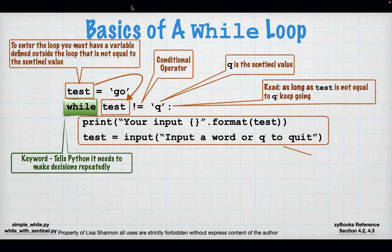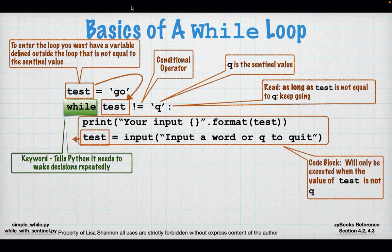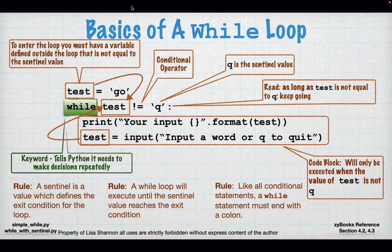Inside the local scope there are just a couple of lines: I'm going to print what somebody input, and then ask them to change the value of test by saying 'input a word or Q to quit'. The value of test is what changes. When we go back to the top of the while loop and test against Q, if they're the same, nothing else happens; if not, it goes back through, prints your input, and asks for more input.